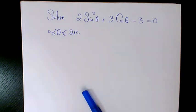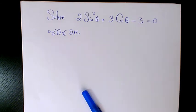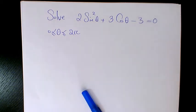What's up guys, this is Massey, welcome to another video. In this video I want to solve this trigonometric equation: 2 sine squared theta plus 3 cosine theta minus 3 equals 0, and we need to solve it for theta between 0 and 2 pi.